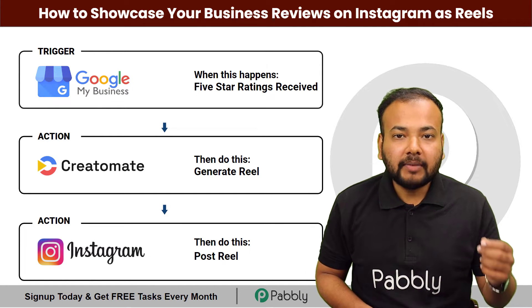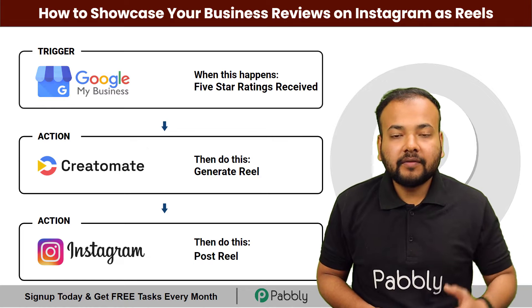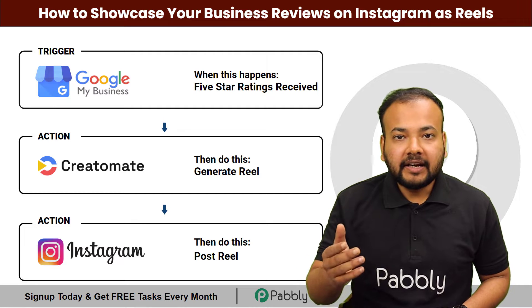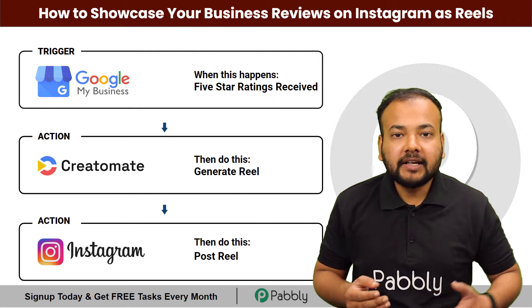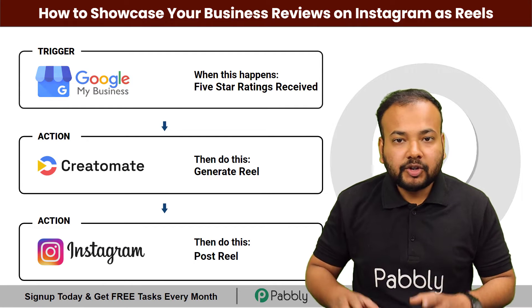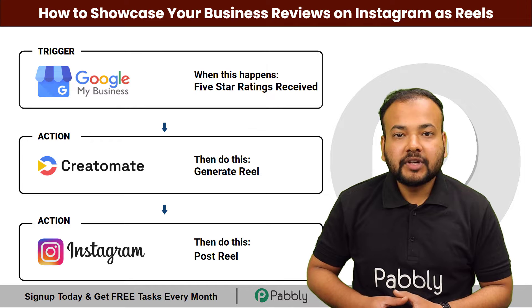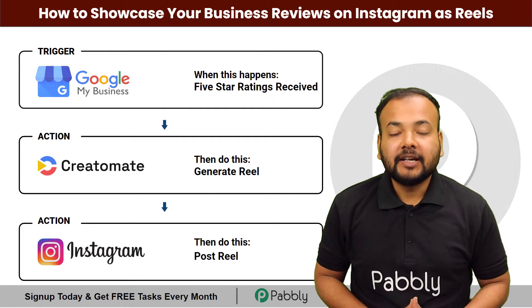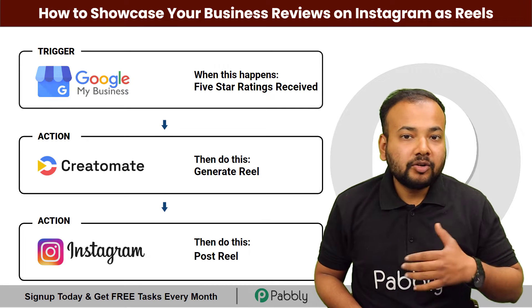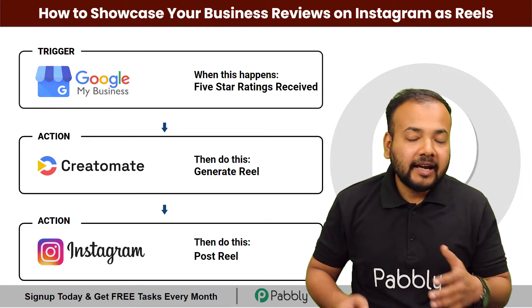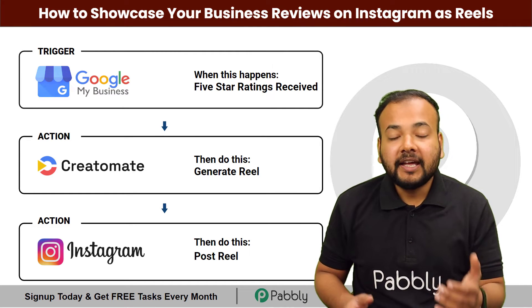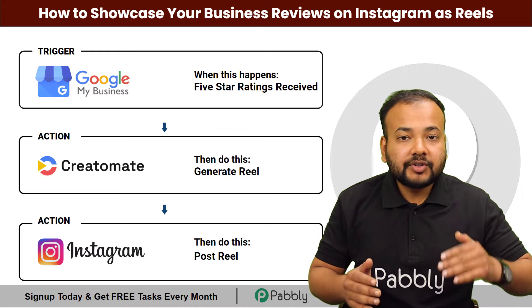You just have to connect Google My Business as the trigger of the workflow. And as and when you are getting a 5-star rating, a Reel video will be created out of Createomat application. The same Reel video, which is going to showcase your ratings and reviews, will be shared on your Instagram automatically. So you do not have to manually check for 5-star ratings, manually create a Reel, or manually post it. It will save a ton of your time and you can actually focus on your business.